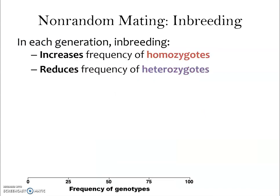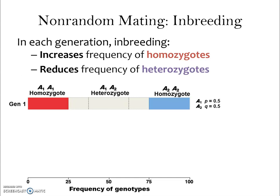Let's look at a population where a quarter is one type of homozygote, another quarter is the other type of homozygote, and half the population is heterozygotes. On the right you can see equal frequencies of our two alleles A1 and A2 — p and q are both equal to 0.5. Looking across generations, with inbreeding we see an increase in the frequency of homozygotes and a reduction in the frequency of heterozygotes.